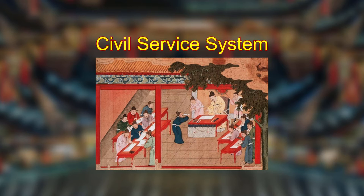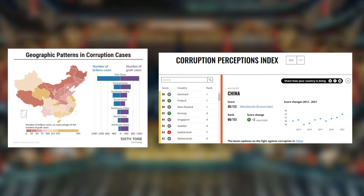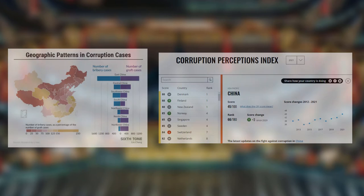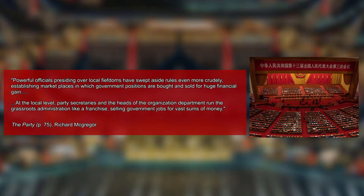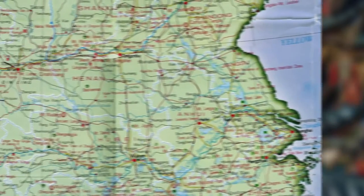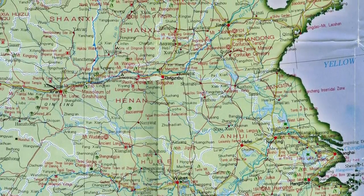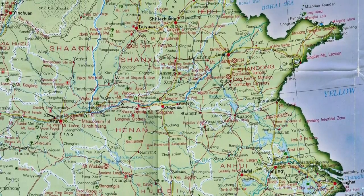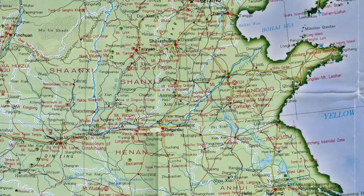Back in the dynasty era, the selection process was not perfect, with only rich aristocrats having access and the resources necessary to compete in such examinations. The current selection process, like those in the past dynasties, also has weak points. The issue of corruption expresses itself at the local level, in which party secretaries and the heads of the organization department run the grassroots administration like a franchise, selling government jobs for vast sums of money. The party accordingly tries to tweak and adjust the system to mitigate corruption, for example by stress-testing promising officials and rotating them through various jobs in different parts of the country before sending them to Beijing, the political capital.